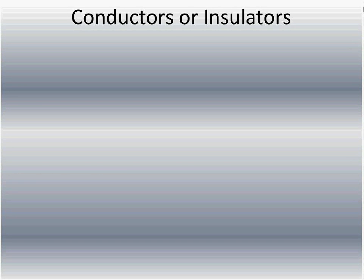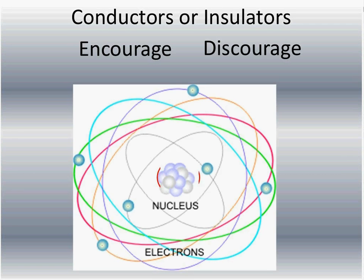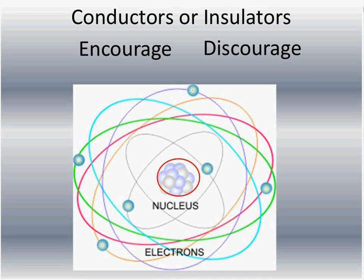When we talk about electricity, we're going to go right down to the very basics here. We're going to look at an atom. When you look at an atom, it's made up of different parts. We've got the nucleus, and the nucleus is made up of protons and neutrons.